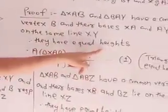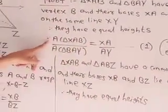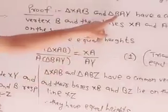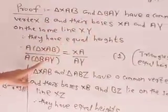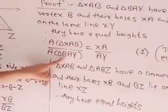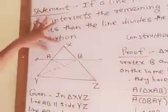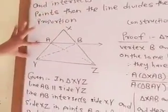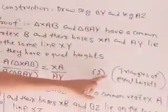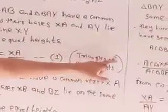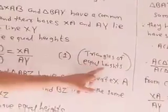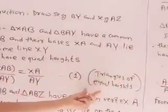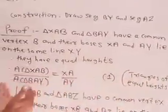Therefore, area of triangle XAB upon area of triangle BAY equals XA upon AY. This is Equation 1 — triangles of equal heights.